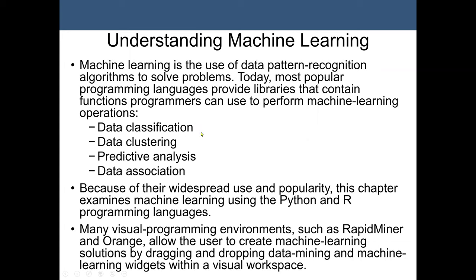The concept of data classification involves what we call training data. Training data is data that also has the class label or target variable. We may have some attribute values, and the dataset might be about patients that have disease A. We have all the attribute values and the target variable will be whether the patient has disease A — yes or no, true or false. With this dataset we can build a model, then use the test set to test it.